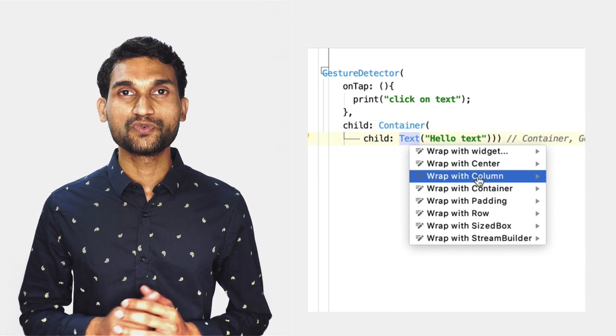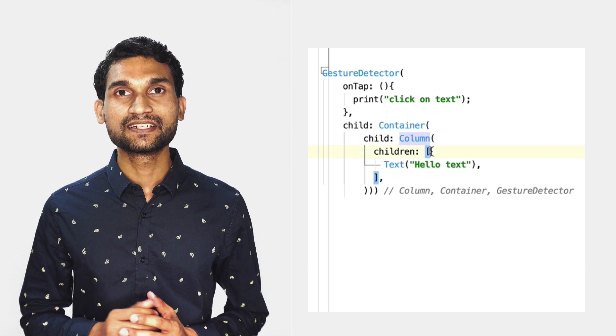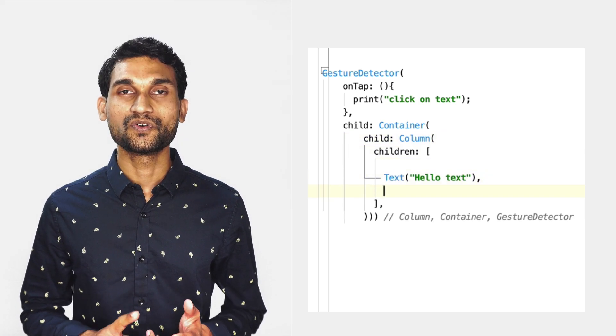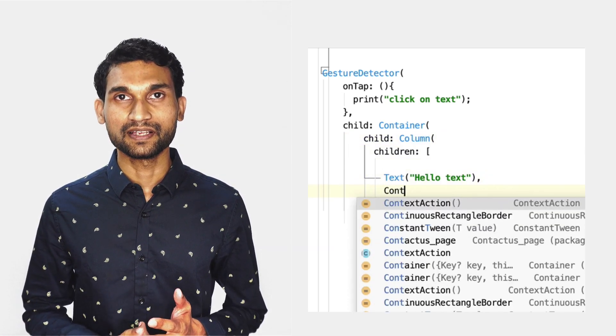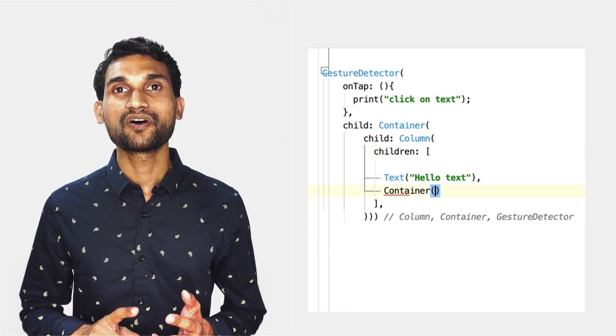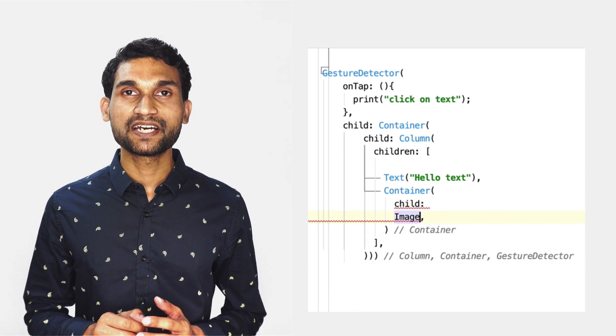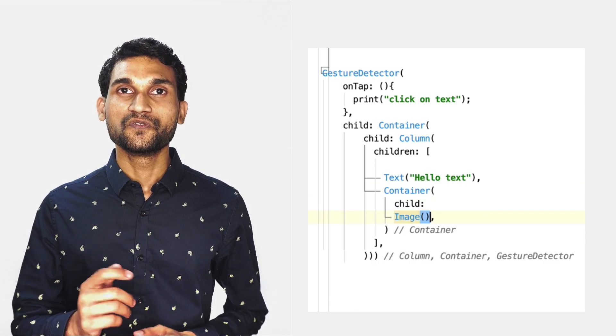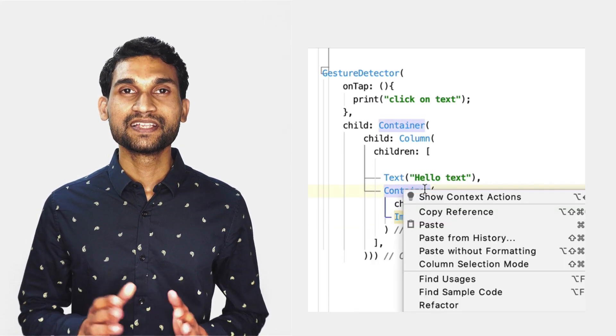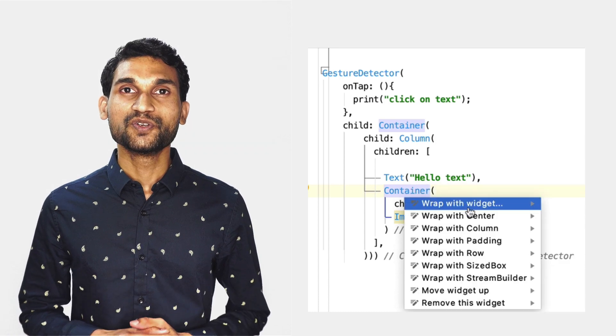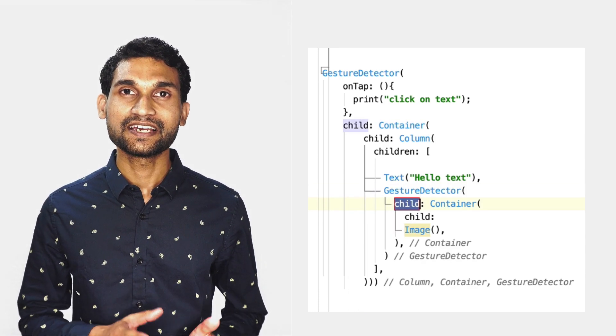So if you want to add a click event over text, over an image, or even over a layout, you can wrap that widget with GestureDetector. That's the way you can add any widget anywhere. So another question is: in which language is Flutter built?